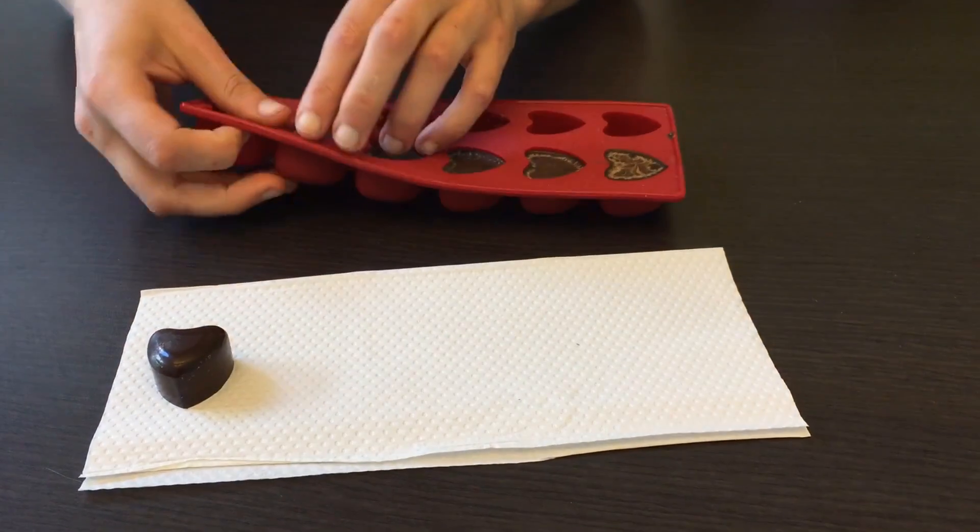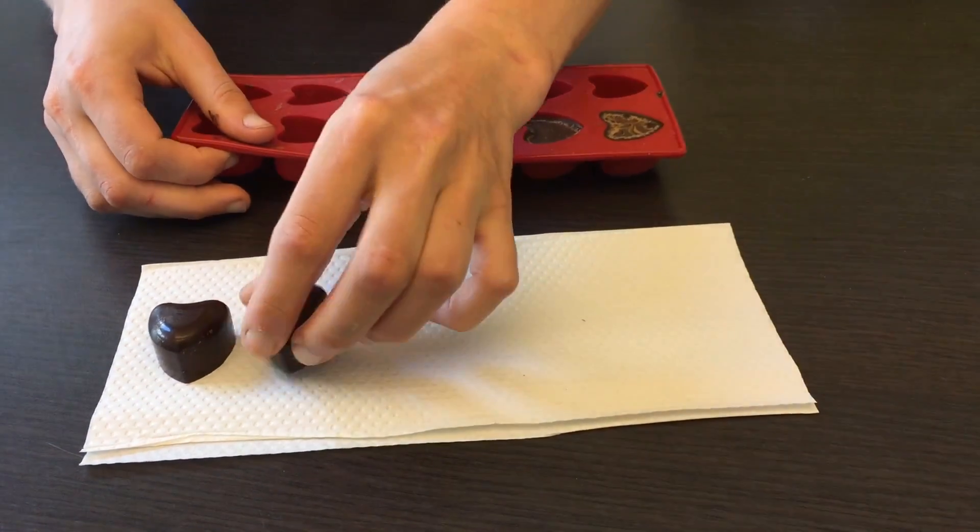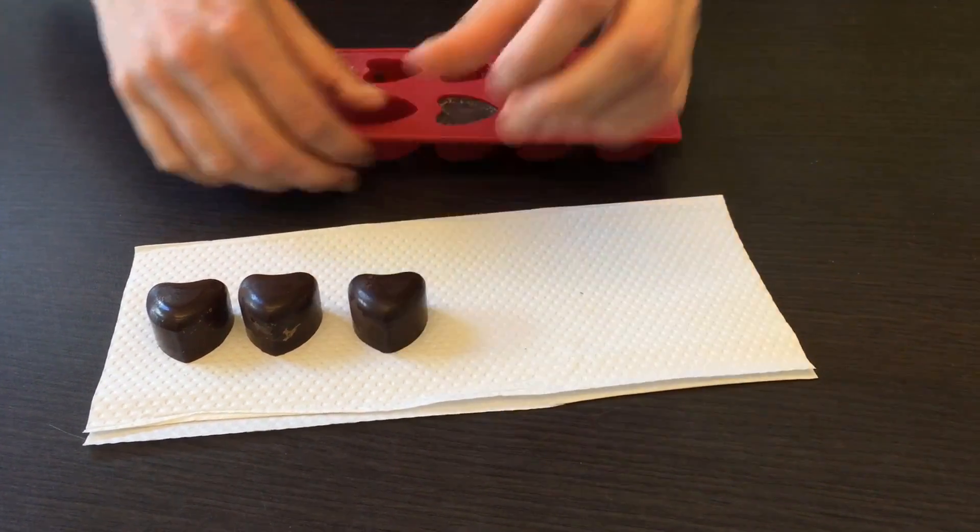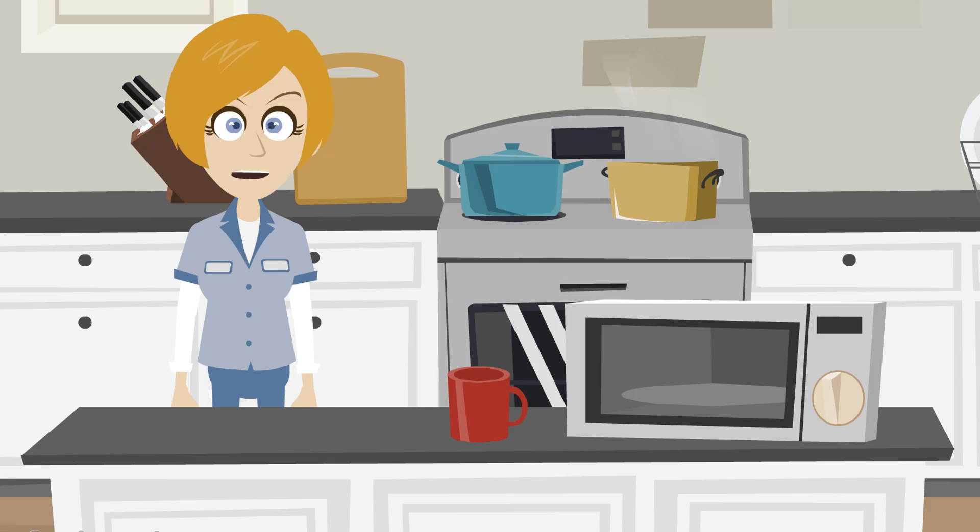Now that it's been a couple hours, let's take a look at the result of our experiment. Taking the chocolate out of the mold, we can see that it has indeed retained the shape of the mold. This first part of our hypothesis has been confirmed.